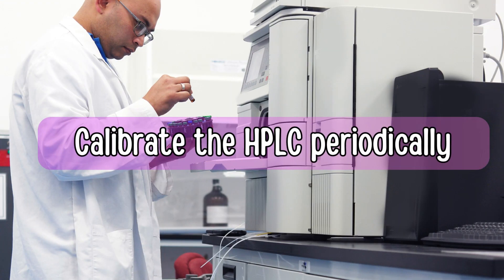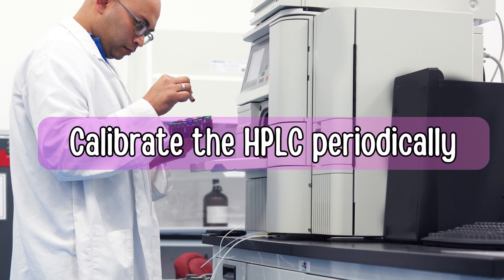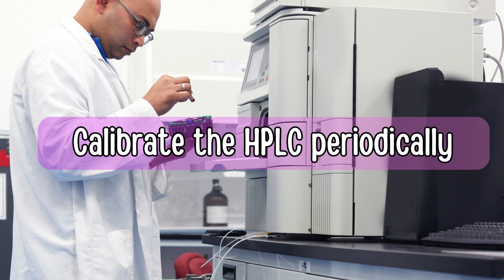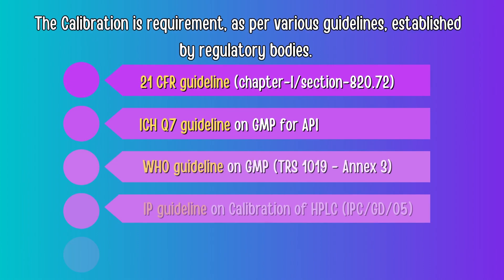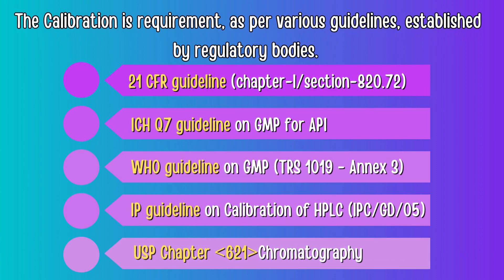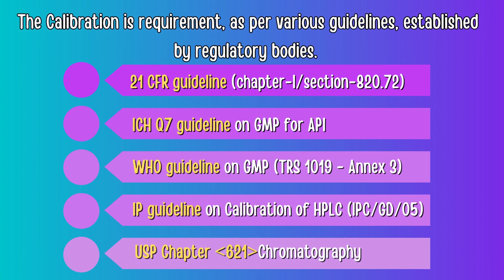Due to its continuous usage, its performance might be impacted. That is the reason it is necessary to calibrate the HPLC periodically to get accurate and reliable results. Also, calibration of instruments is a requirement as per various guidelines established by regulatory bodies, such as 21 CFR, ICH Q7 on GMP for API, WHO guideline on GMP, IP guideline on calibration of HPLC, and USP Chapter 621, which gives general requirements for chromatographic procedures including HPLC.